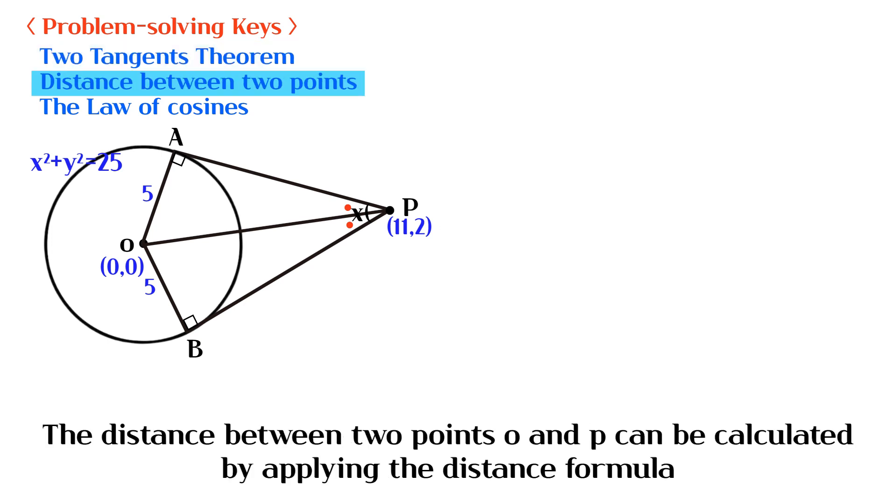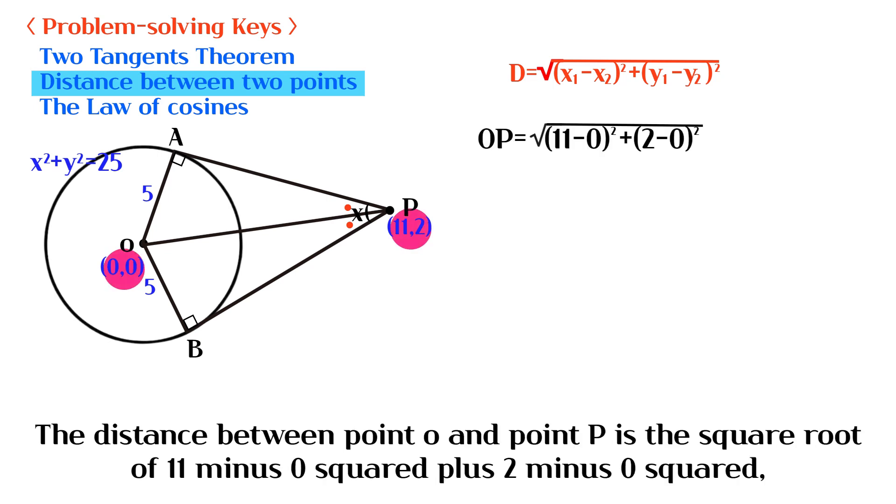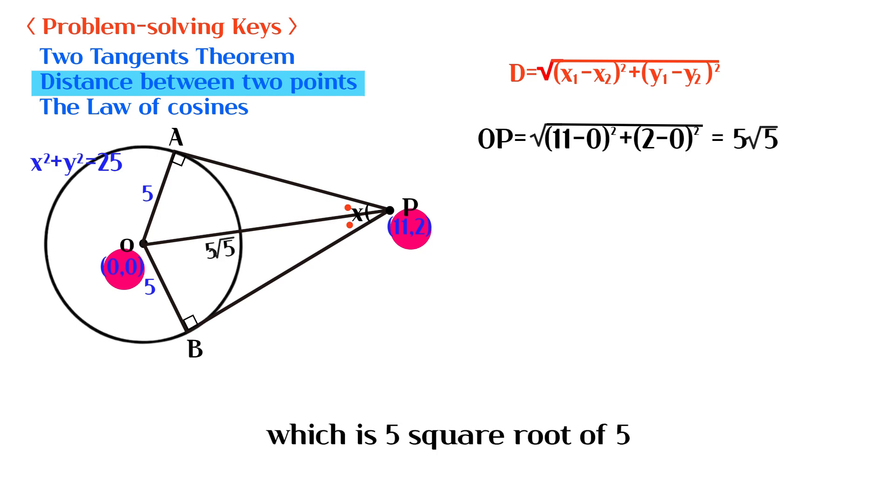The distance between two points O and P can be calculated by applying the distance formula. The distance between point O and point P is the square root of 11 minus 0 squared plus 2 minus 0 squared, which is 5 square root of 5.